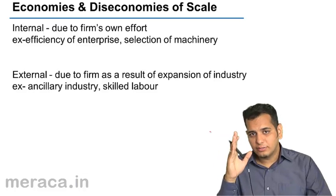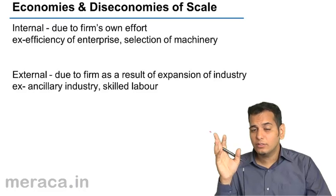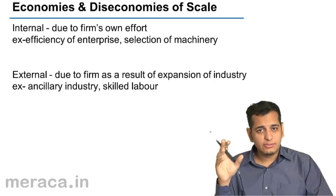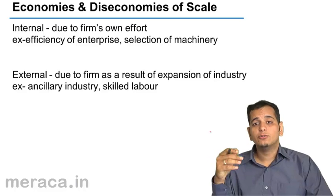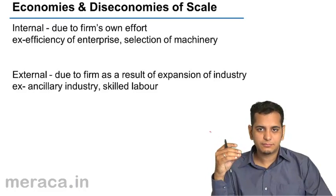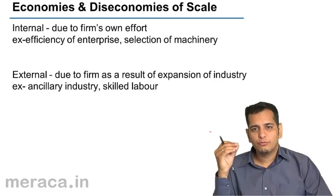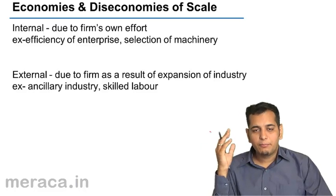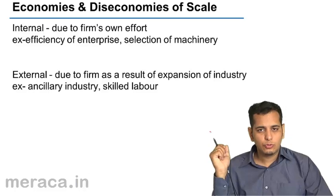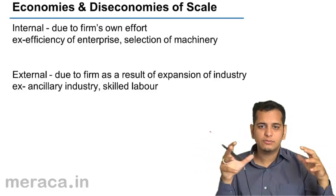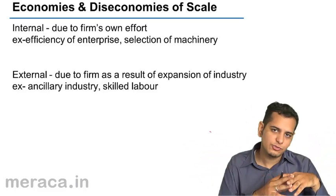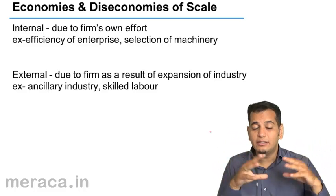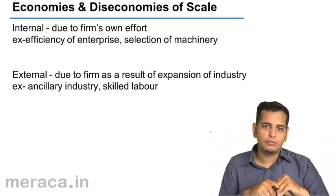However, after this point, if production is increased further, it puts a lot of pressure on those factors of production. As a result, the firm now starts getting dis-economies. The cost of production of one unit now goes on increasing as production is kept on increasing. So initially when the firm expands, it tends to get economies, and later on, the firm tends to get dis-economies from the scale after a certain level of production.